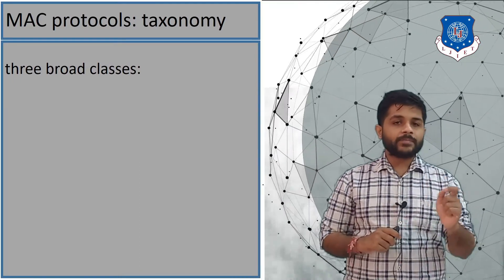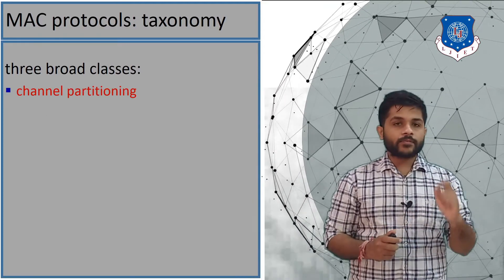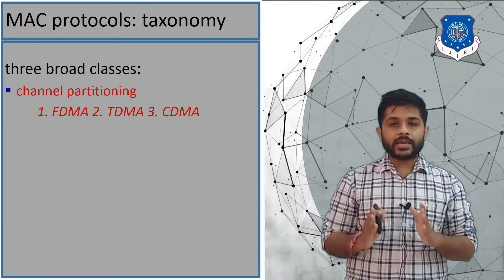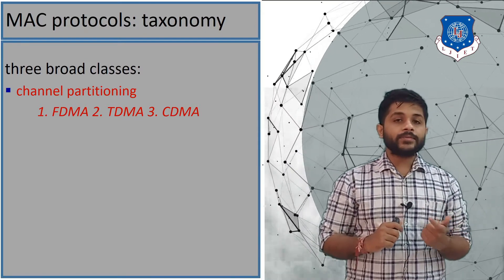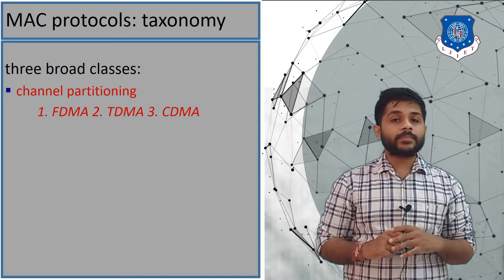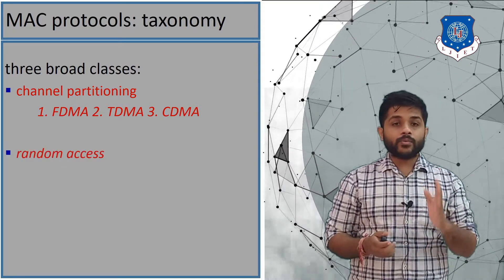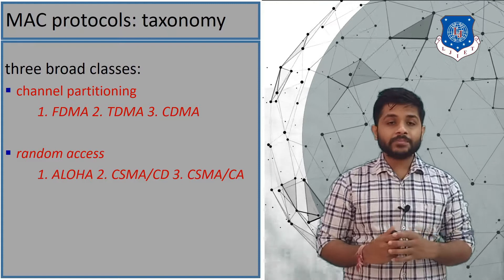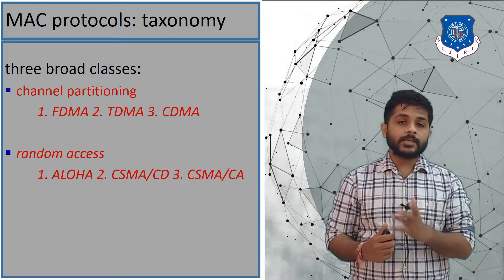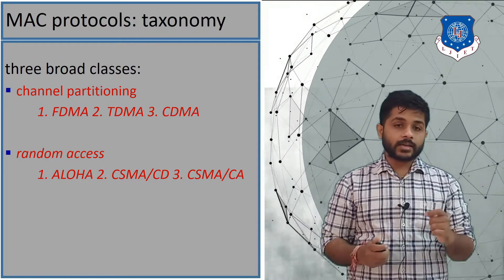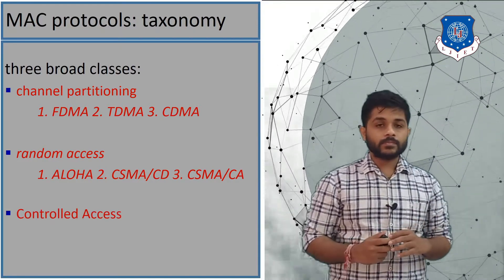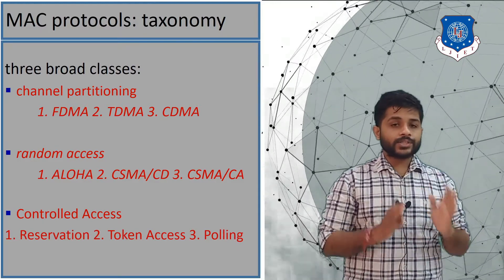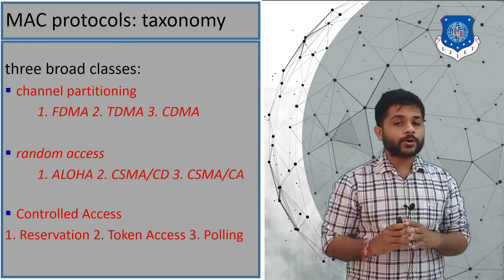The multiple access protocol is divided into three classes. The first is the channel partitioning protocol, which includes FDMA (Frequency Division Multiple Access), TDMA (Time Division Multiple Access), and CDMA (Code Division Multiple Access). The second type is the random access protocol, which is divided into ALOHA, CSMA/CD, and CSMA/CA. The third type is the control access protocol.